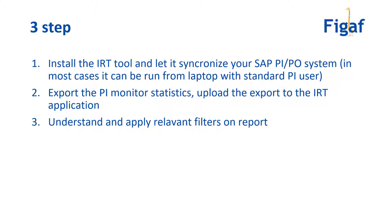It involves three easy steps. The first is to install the VGAV ERT tool, connect it to your PI/PO system, and synchronize it. In most cases you can just use your own laptop and your own user. Then you go into the PI monitor, export the statistics, upload it, and in a matter of minutes you will get a report that shows what the message mappings are in your system.